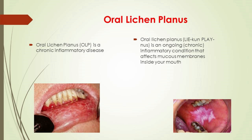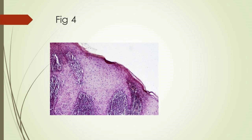Oral lichen planus (OLP) is a chronic inflammatory disease. It is suggested that OLP is a T cell-mediated autoimmune disease. Induction of apoptosis of the basal cells of epithelium by CD8+ T cells is the possible mechanism of development. WHO considers OLP as a potentially precancerous lesion, especially in the presence of dysplasia. Oral lichen planus may appear as white lacy patches, red swollen tissues, or open sores, causing burning pain or other discomfort. Microscopically, a lichen planus lesion shows a saw-tooth shape with rete ridges and a band-like proliferation of lymphocytes immediately underlying the epithelium.